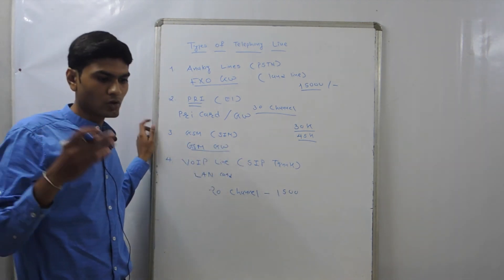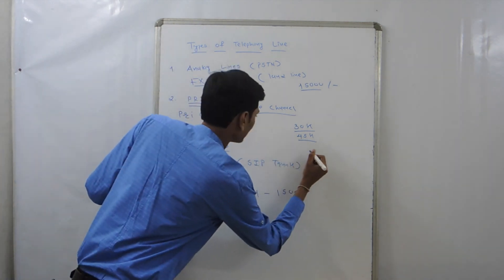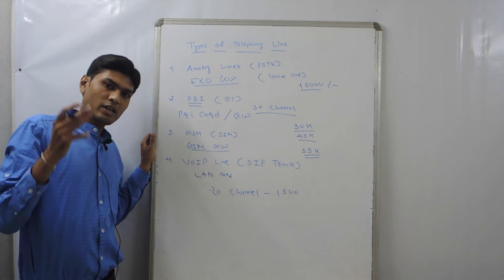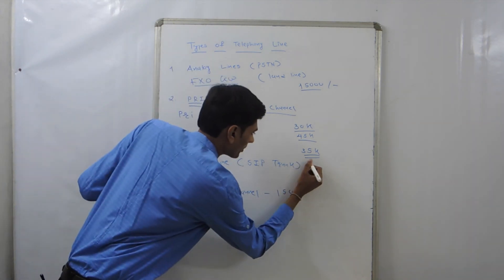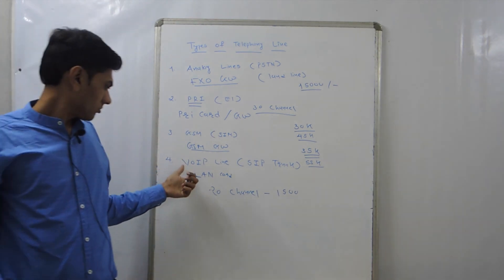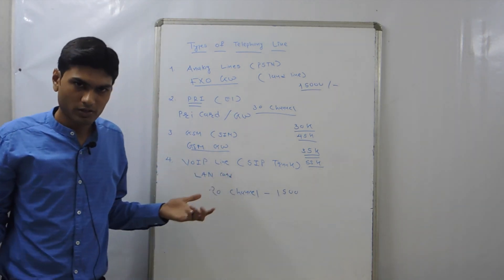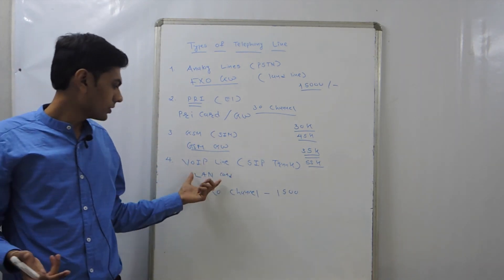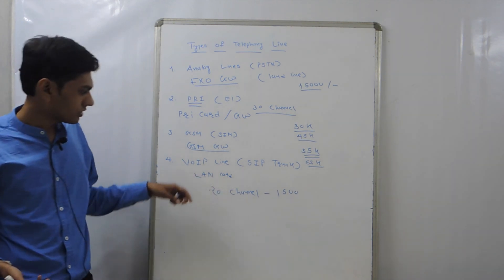For GSM, if you take 4-port GSM, then it will cost you around 35,000, and if you take 8-port GSM gateway, it will cost you around 55,000. For VoIP line, you only have to connect into the normal LAN card, so there is no much cost.